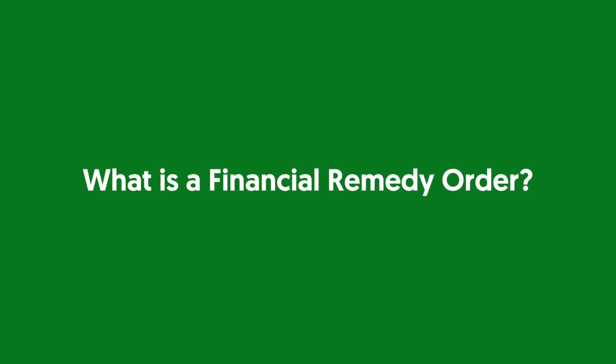What is a financial remedy order? Apart from the consent order, there is another type of financial order known as a financial remedy order. This order is less common but can be issued as part of divorce proceedings. It involves the court stating how matrimonial assets will be divided, including provisions for child maintenance and spousal maintenance, if applicable. A financial remedy order is sought when the divorcing couple cannot reach an agreement on asset division. Before making a court application, they are required to consider mediation, unless instances of domestic violence have occurred during the relationship.